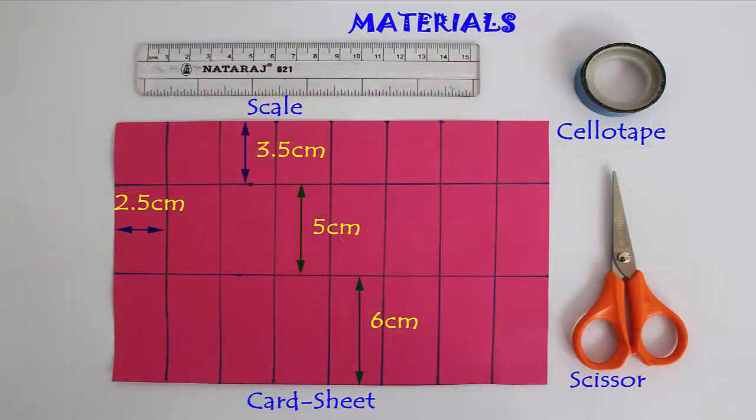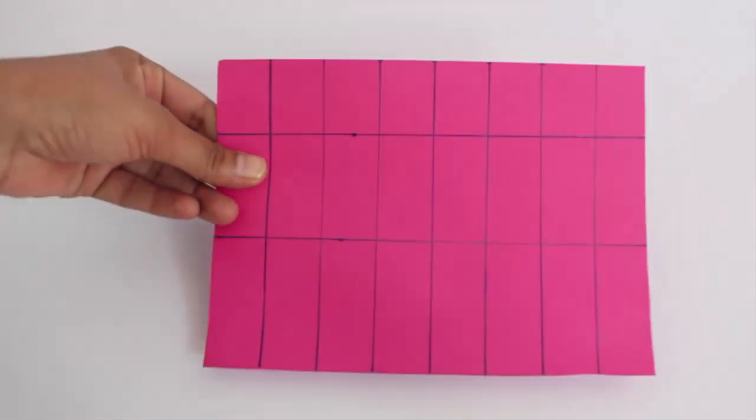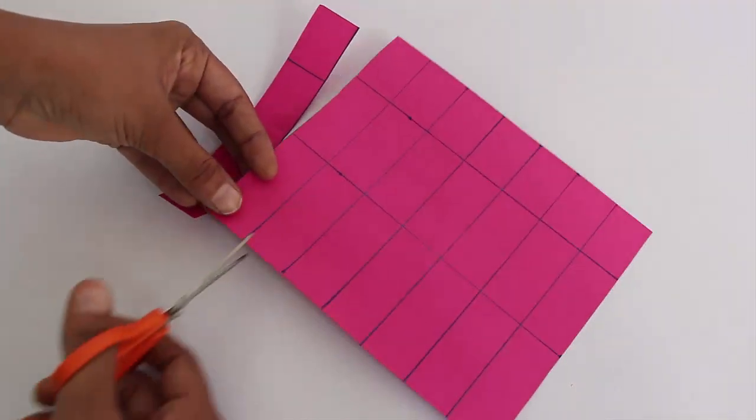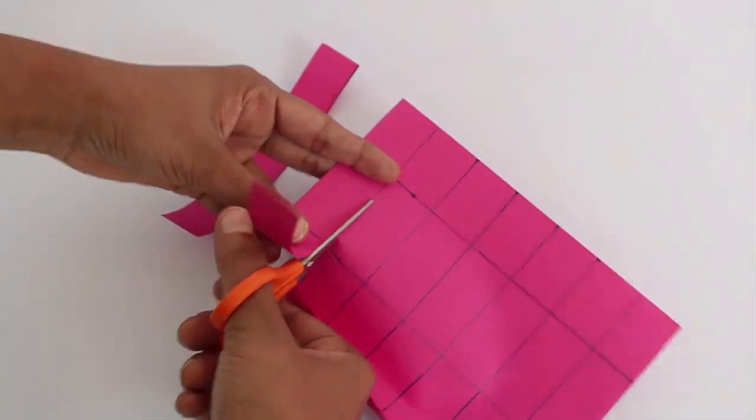To make these triangular patterns you require a card sheet. Mark 8 strips: 6 cm, 5 cm, and 3.5 cm. Each strip should be 2.5 cm wide.